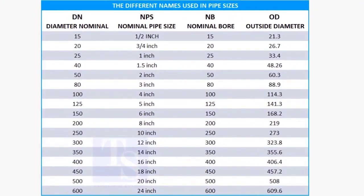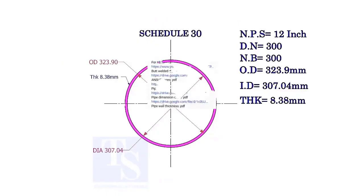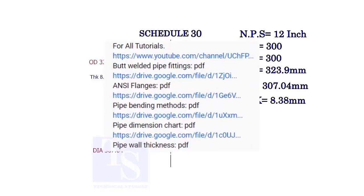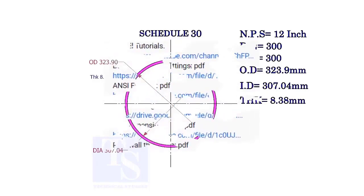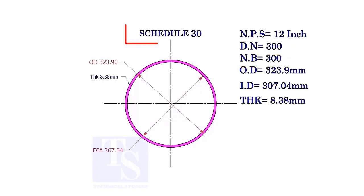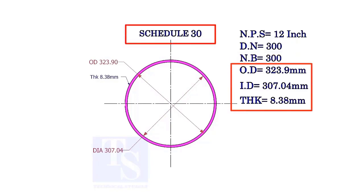Please check the links given in the description for PDF documents. Please comment. Let us study the terms of a 12 inch pipe. The DN and NB sizes are the same. This is a schedule 30 pipe. Read the OD, ID, and thickness.